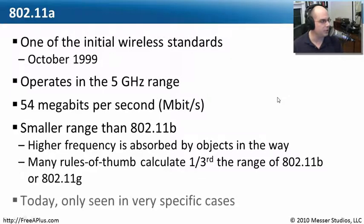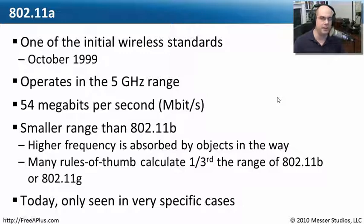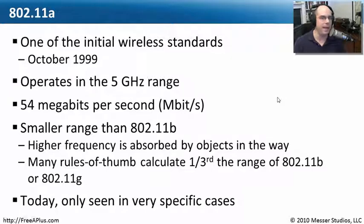802.11a was used, but really only in very specific places like large open environments such as warehouses. Because of that, you really don't see very widespread use of this technology. There was such an onslaught of 802.11b devices that the prices of those chips dropped quite a bit, and 802.11b really became the primary focus of where people were putting their wireless technologies.